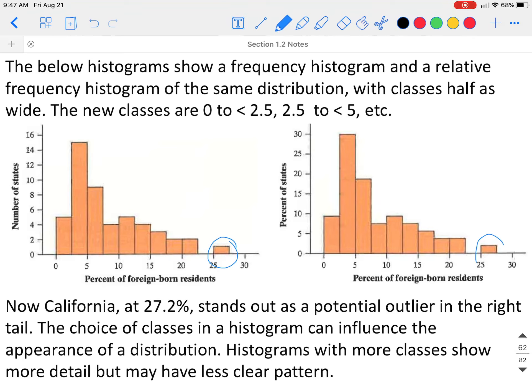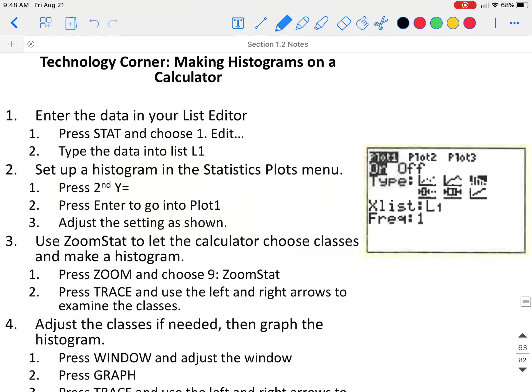Now we can see that there is a potential outlier. By making your classes smaller, it may be easier to see the shape of your distribution and determine if there's any possible outliers. Now it does look like California could be a potential outlier on that right tail.